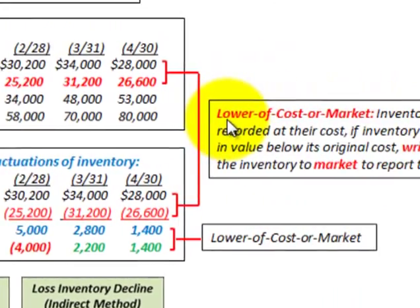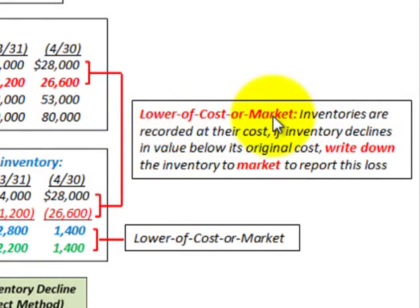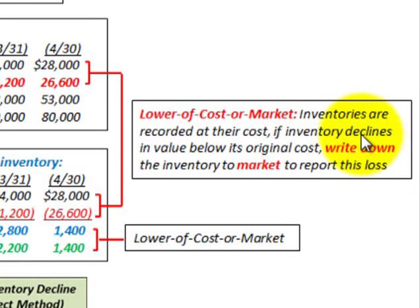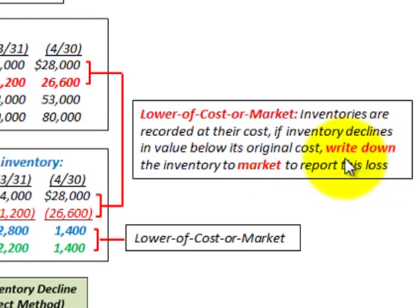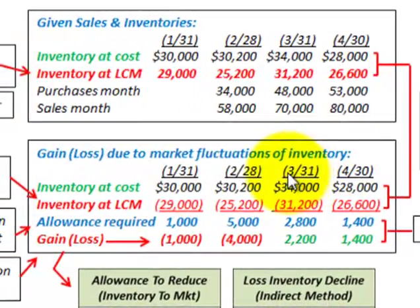Using lower cost or market, inventories are recorded at their cost, and if inventory declines in value below original cost, you write down the inventory to market value and report the loss. Let's look at our calculation.